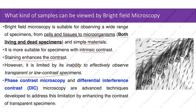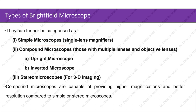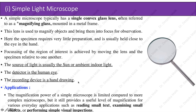Types of bright field microscopes: simple microscopes use single-lens magnifiers; compound microscopes have multiple lenses and objective lenses, available as upright or inverted models; and stereo microscopes are used for 3D imaging. Compound microscopes are more capable of providing higher magnifications and better resolution compared to simple or stereo microscopes.